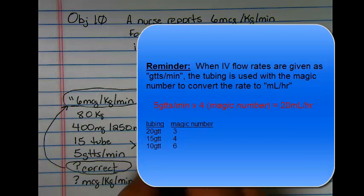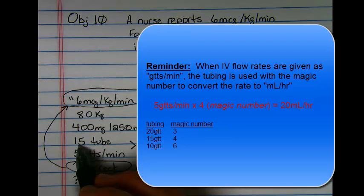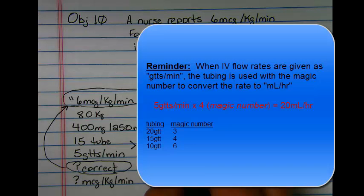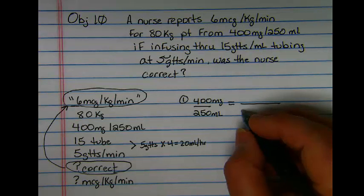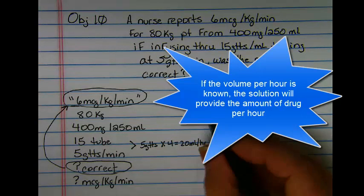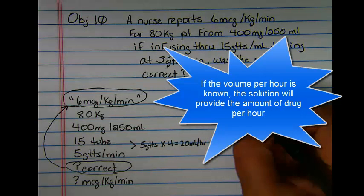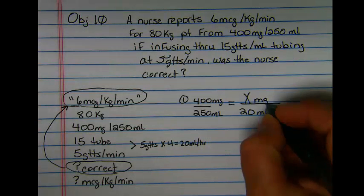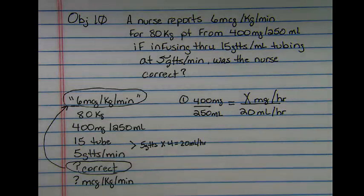So when I do that, my 5 drops multiplied by my magic number, which is how many times my tubing rate will go into 60 and that is 4. And so that means that this patient is receiving 20 milliliters per hour. So if I know 20 milliliters per hour are coming out of this bag, I can figure out how many milligrams per hour this patient's receiving.